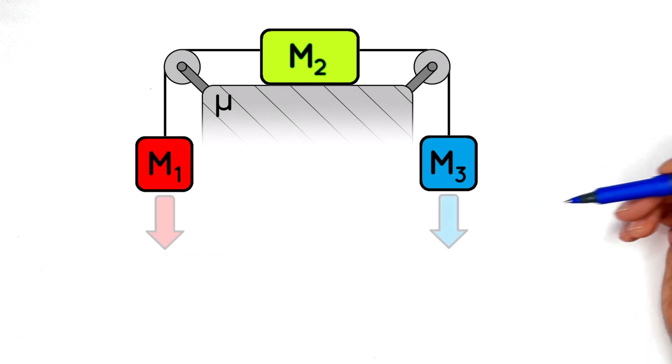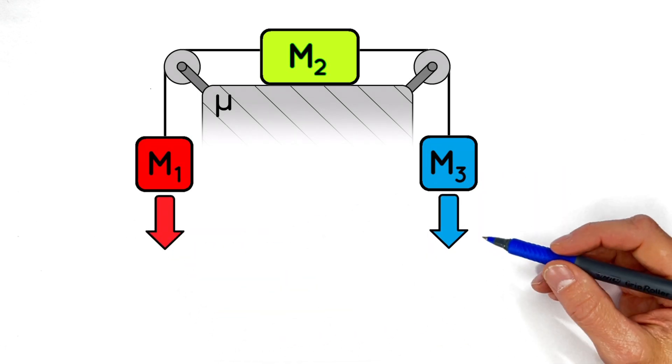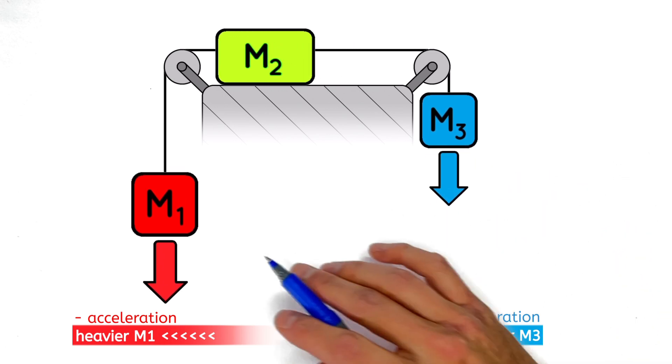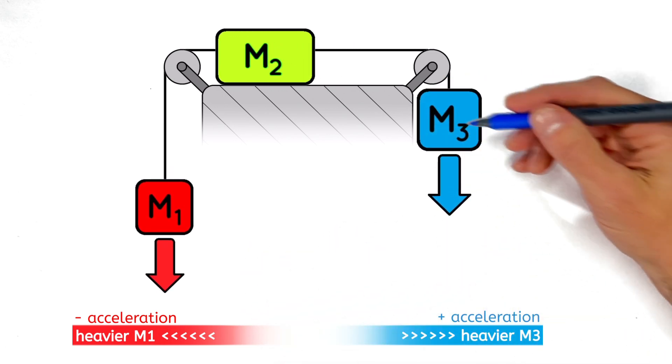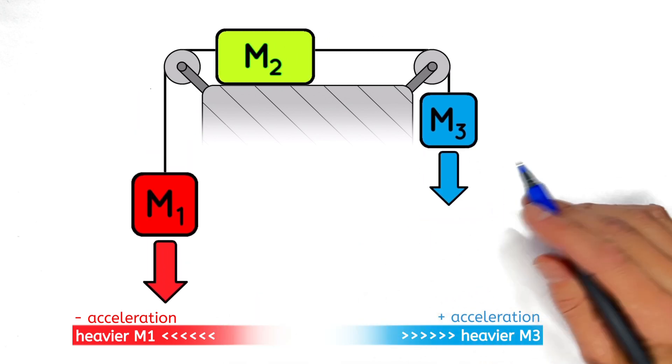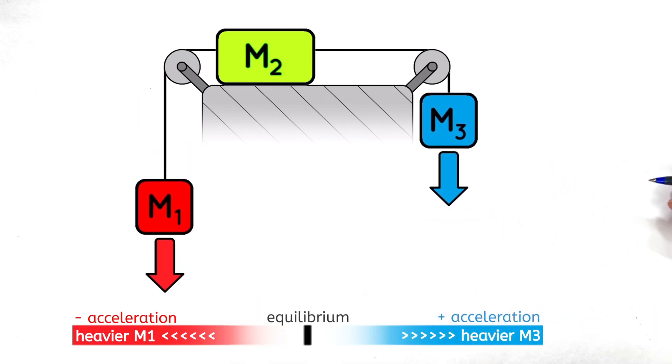This is really a big tug-of-war between these two hanging blocks. In the frictionless case, things are pretty easy. If one block is heavier than the other, then everything's going to get dragged toward that heavier side. It's only when the blocks are perfectly equal in weight that the system sits in equilibrium.